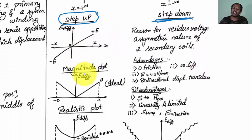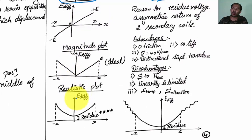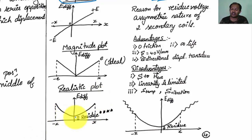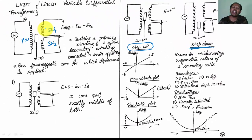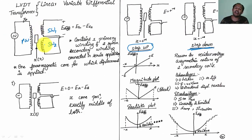The output curve is a magnitude plot, but the realistic plot has a bend-type curve because it is not exactly linear. The point at null position is not exactly zero — you will get a residue. The reason for residue is the asymmetric nature of the two secondary coils: the number of turns, material characteristics, and winding area of the two secondaries cannot be guaranteed to be identical.